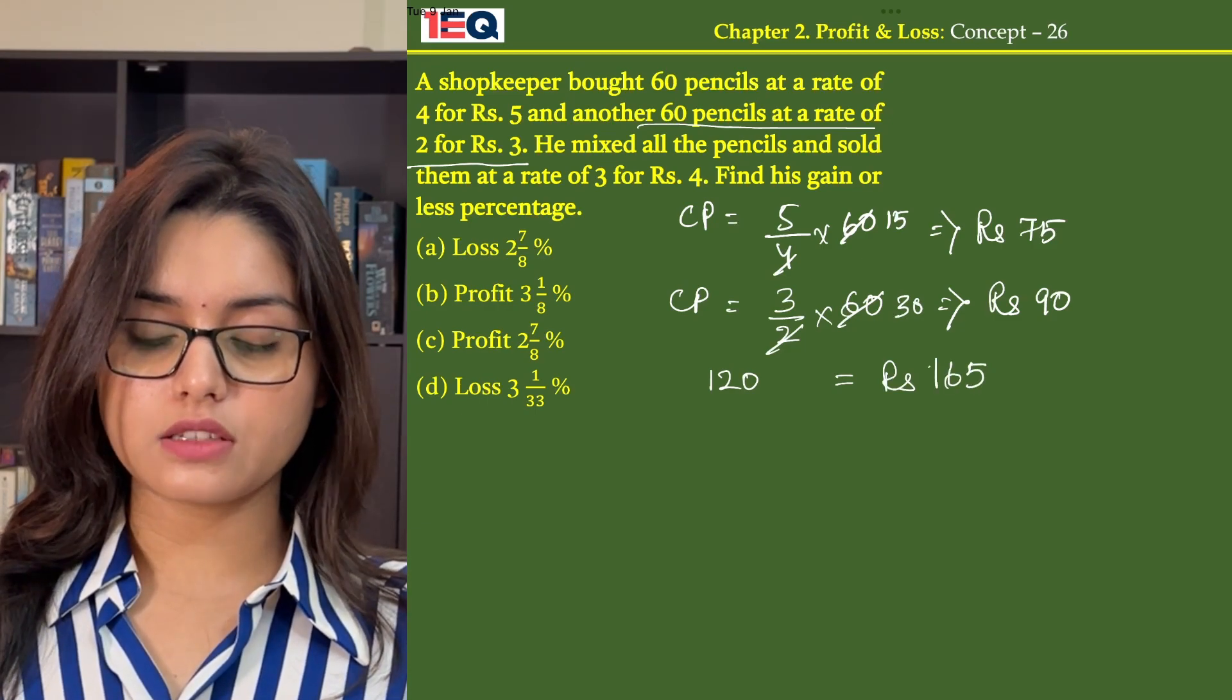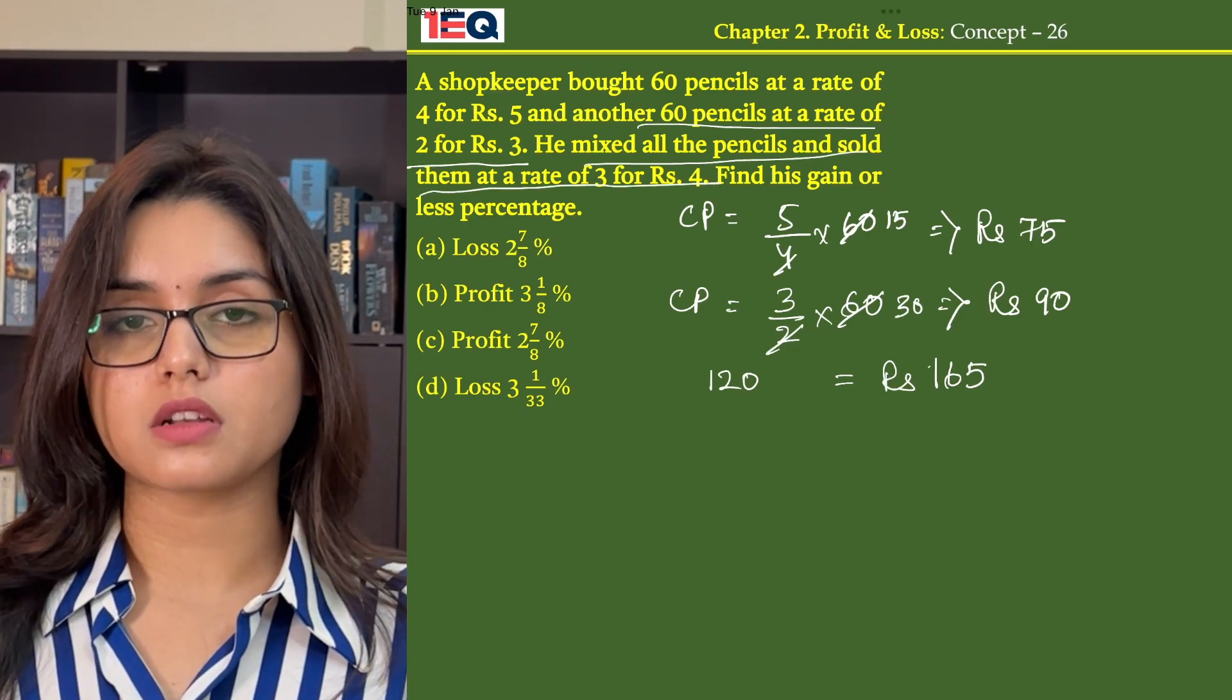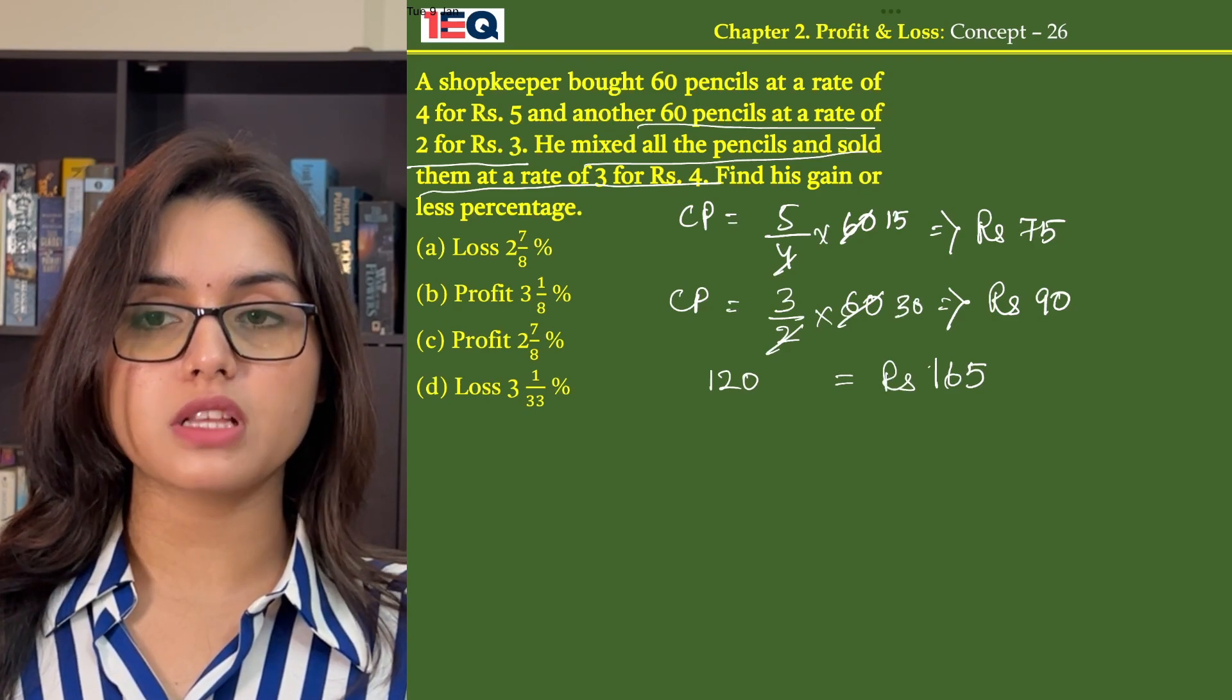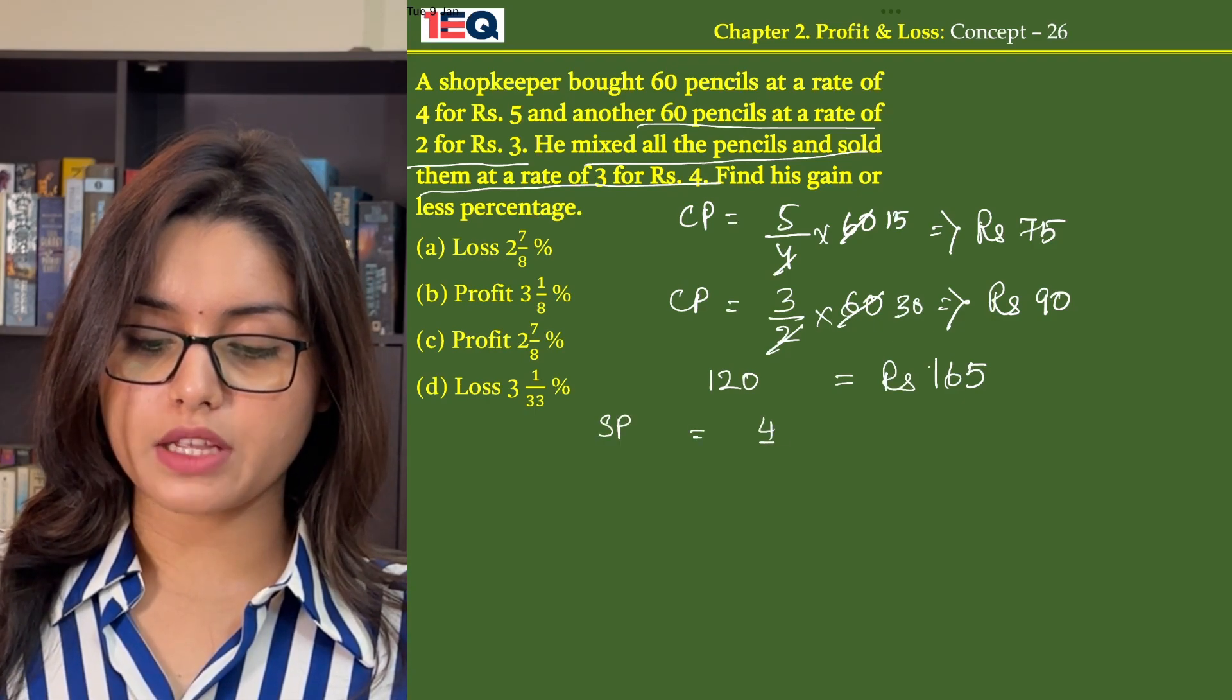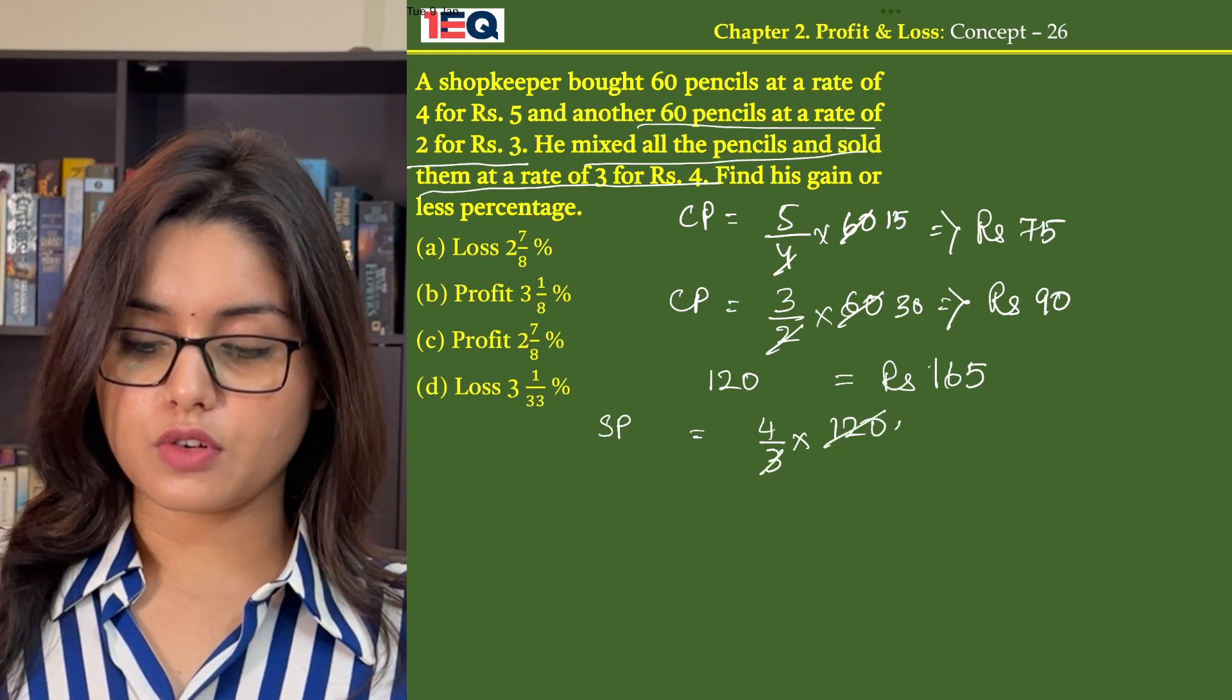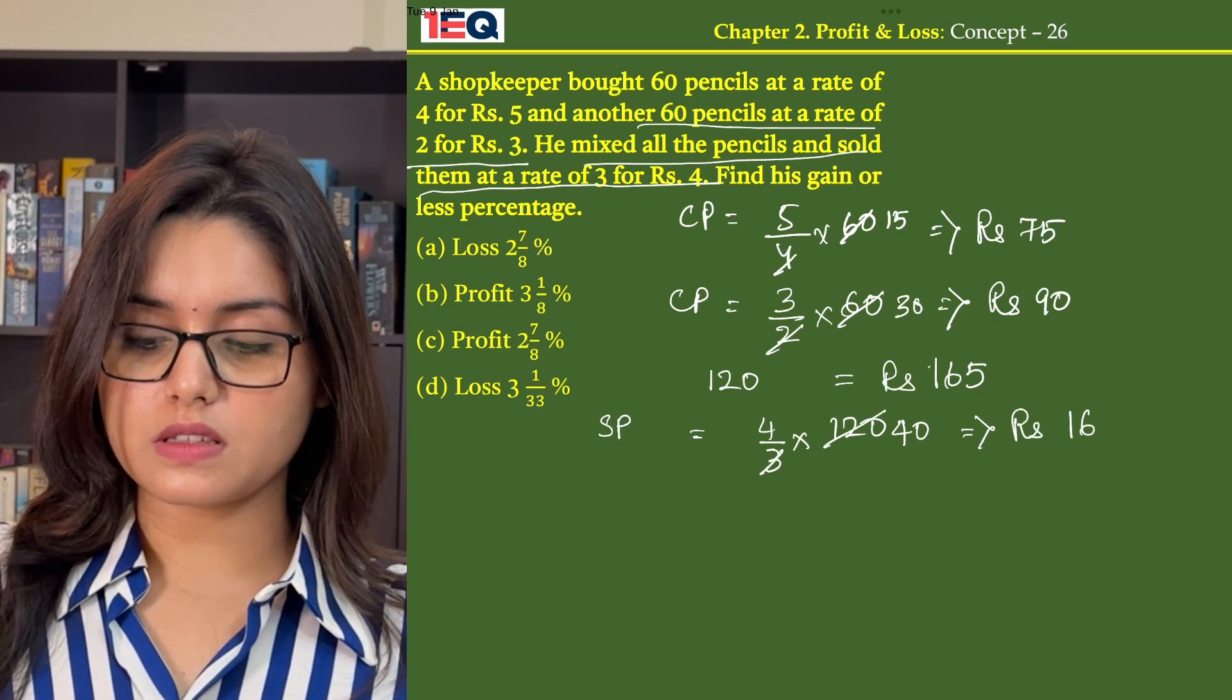Now he mixed all the pencils and sold them at a rate of 3 for Rs 4. That means he sold one pencil for Rs 4 by 3. So the selling price of 120 pencils will be 4 by 3 into 120, which is Rs 160.